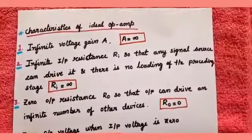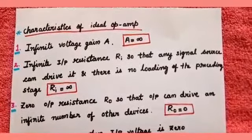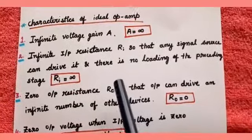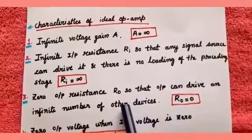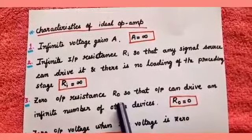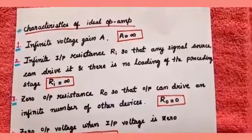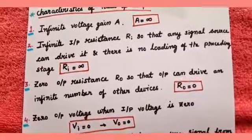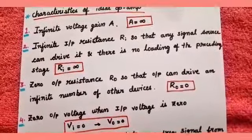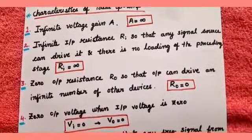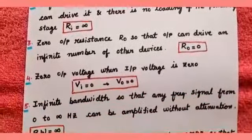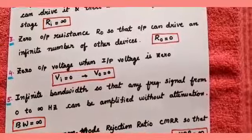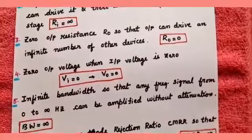The second characteristic is infinite input resistance Ri equals infinity, so that any signal source can drive it and there is no loading of the preceding stage. Third is zero output resistance, Ro equals 0, so that the output can drive an infinite number of other devices. Fourth is zero output voltage when the input voltage is 0. Fifth is infinite bandwidth, so that any frequency signal from 0 to infinite hertz can be amplified without attenuation.